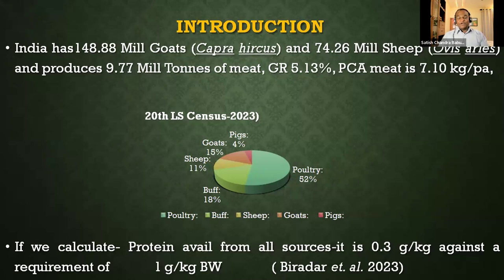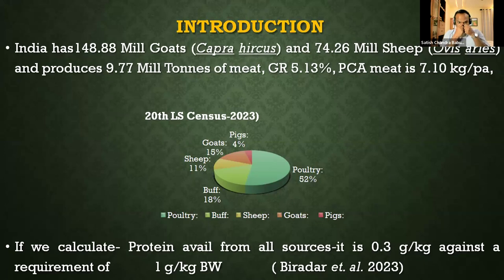Currently, 52 percent of meat comes from poultry, 11 percent from sheep, 15 percent from goat, 18 percent from buffaloes, and only 4 percent from pigs. When we calculate total protein availability from all sources — milk, meat, and egg — it is very meager: just 0.3 grams per kg body weight, whereas the requirement is almost three times that, at 1 gram per kg body weight.